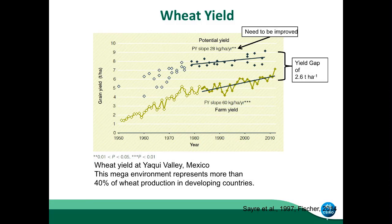And in the top, we have the potential yield. What that means is that the farms cannot achieve exactly the best management in the world, but the potential yield means the crop is growing with the best conditions and the best management. Here is where I think science needs to improve this yield, because it's getting to a plateau. Farmers still can fill the gap, but we need to do more for science.